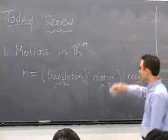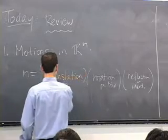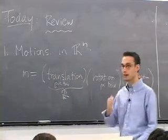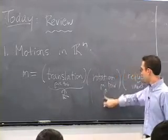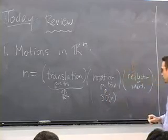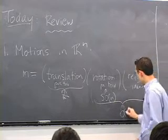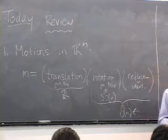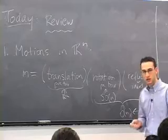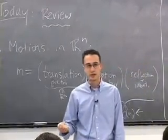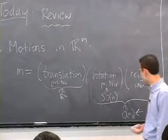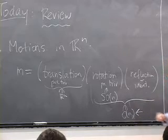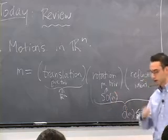We identified the groups these things belong to. A translation looks like an element of Rn — you're just choosing where to translate the origin, and that determines where every other point is translated. Rotations are elements of the special orthogonal group, which arises as the kernel of the determinant map in the orthogonal group On. The orthogonal group is the set of matrices in GLn such that the transpose equals the inverse, or equivalently, whose column vectors form an orthonormal basis. We had a theory of bilinear forms connecting these characterizations.